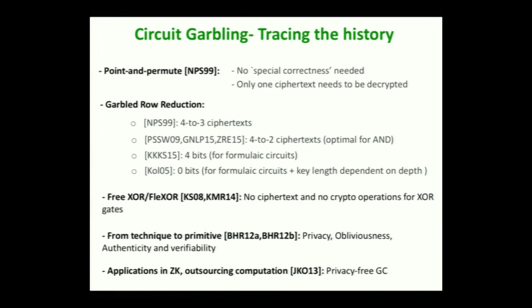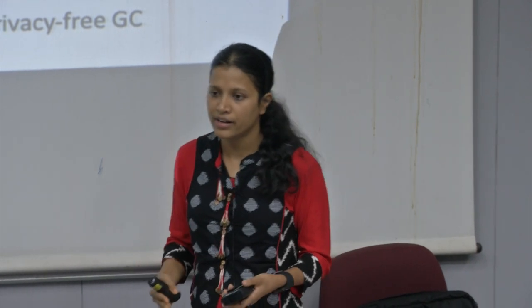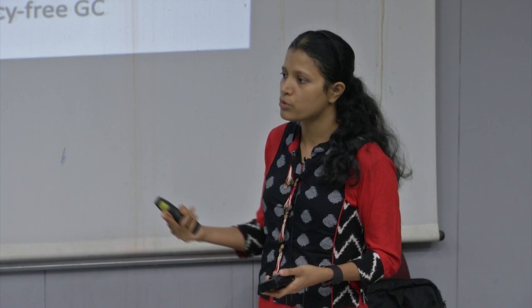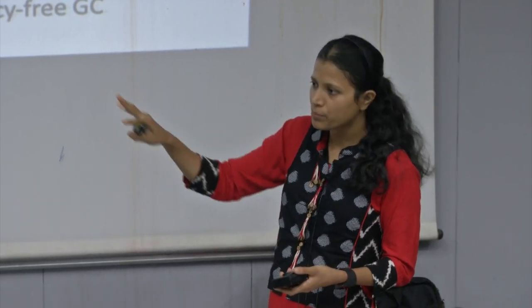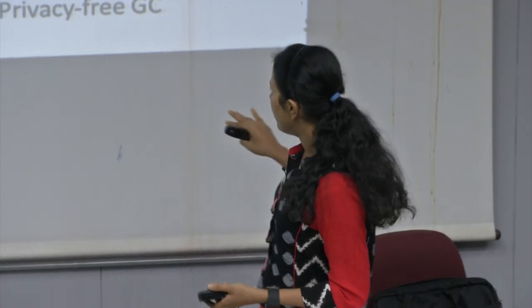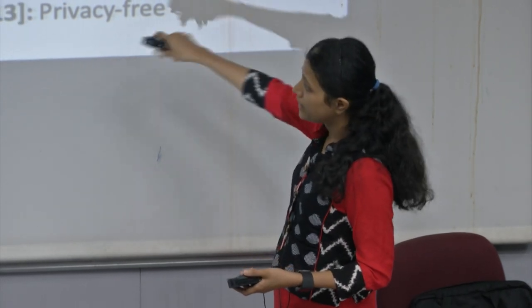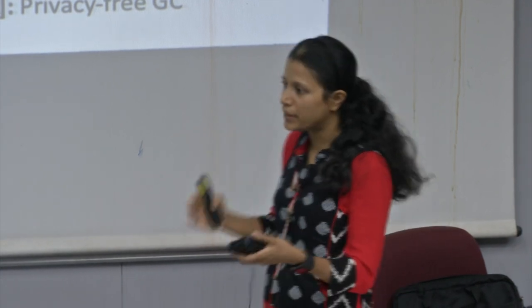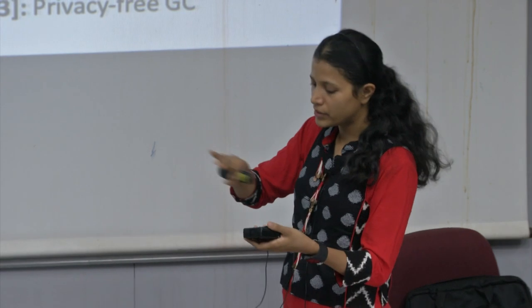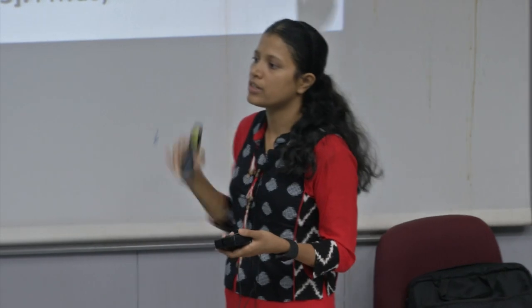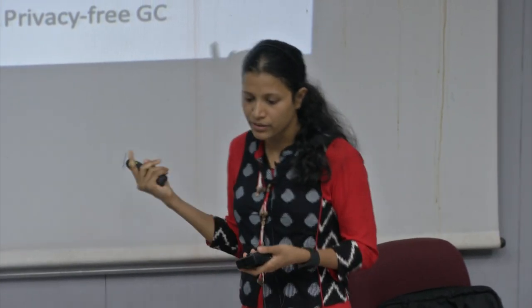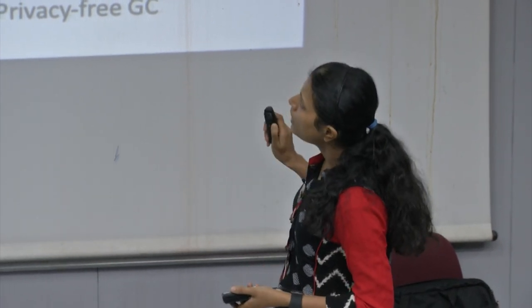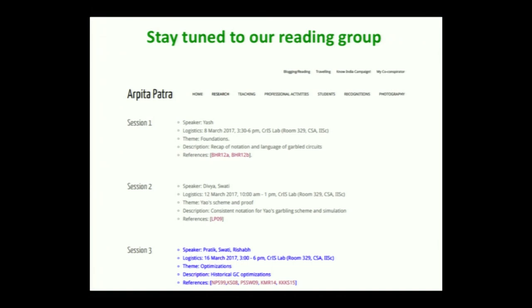For zero-knowledge and outsourcing of computation, we can use special privacy-free garbled circuits. In these, you know the meaning of the keys, but what must be hidden is the key you are not supposed to obtain on the output wire. You get one key corresponding to one input; you should get only the output key corresponding to that output — you should not be able to obtain the other output key. This is the authenticity property of garbled circuits.